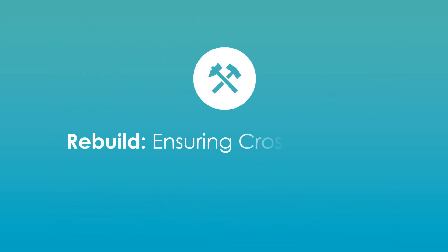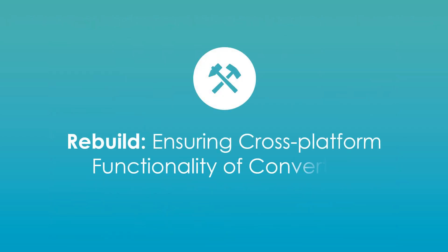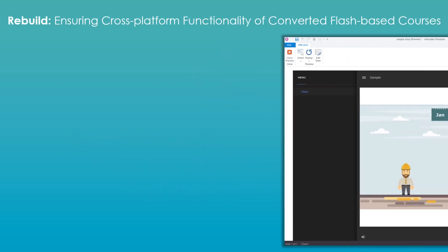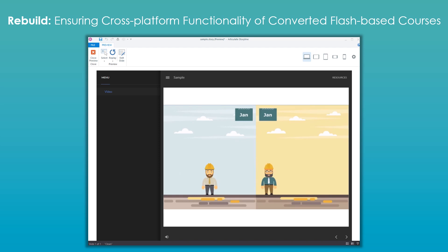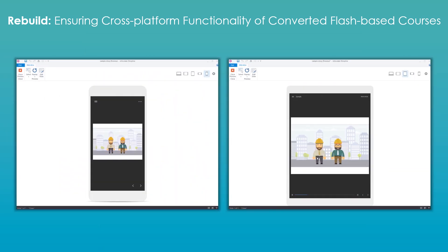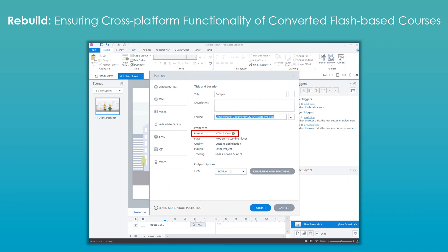Rebuild: Ensuring cross-platform functionality of converted Flash-based courses. The new responsive player of Storyline 360 can be used to obtain dynamic output that can automatically adapt to various mobile devices, such as smartphones and tablets. Storyline 360 also extends support to all HTML5 gestures, such as dragging, swiping, and pinch-to-zoom in all mobile devices.